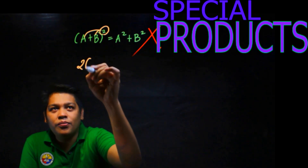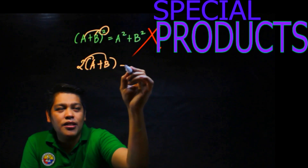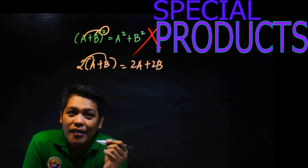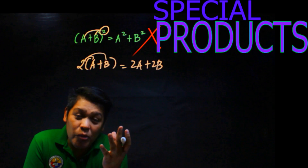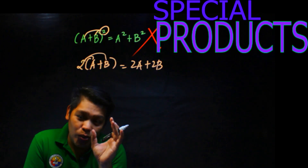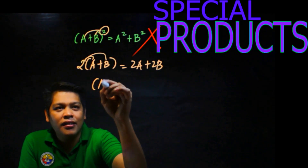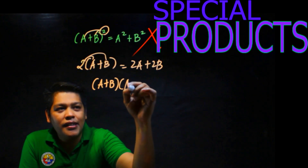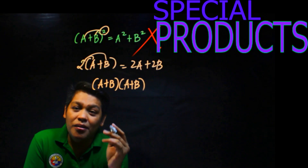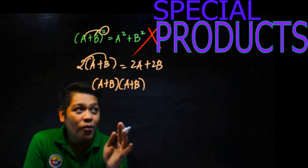That is wrong. If it were 2 times (a + b), you can distribute: 2a plus 2b. But with squaring, you cannot. Remember the concept of exponents: you multiply the base by itself. So (a + b) squared means (a + b) times (a + b). When multiplying two binomials, use the FOIL method.